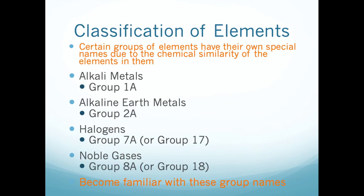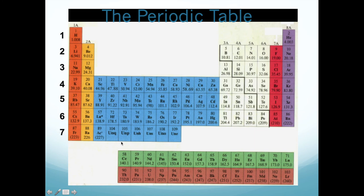Many groups have special names. The metals in group 1 are known as alkali metals — with the exclusion of hydrogen. Group 2 are known as the alkaline earth metals. Group 18 are the noble gases. Group 17 are the halogens.